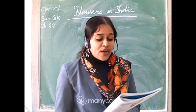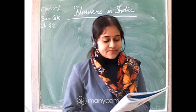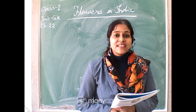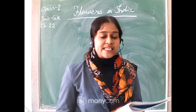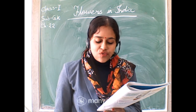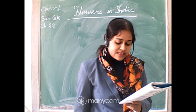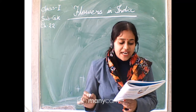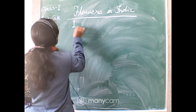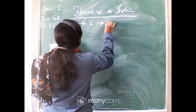Your activity today is: join the lines to the pictures about these common Indian flowers. Number one: Lotus. Lotus is the national flower of India. It grows in ponds and has floating leaves. Join number one to picture C.